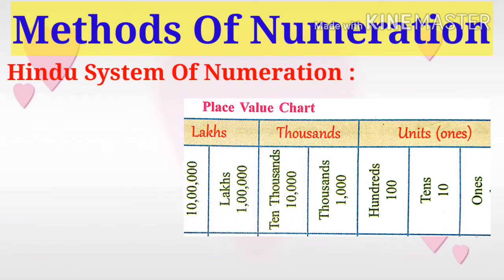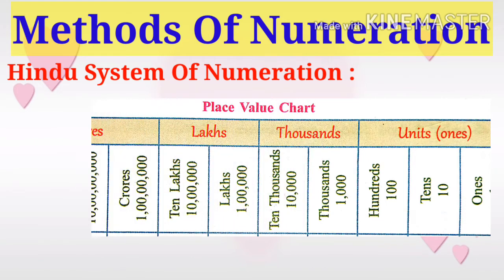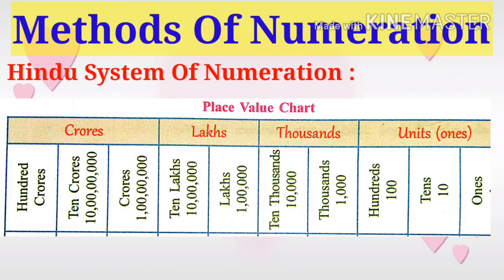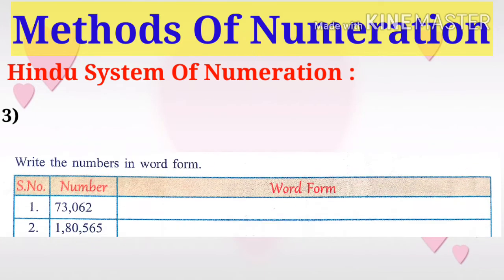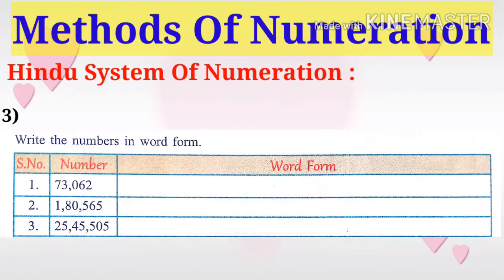In the Hindu system there are four parts: units, thousands, lakhs, and crores. In units: ones, tens, hundreds. In thousands: thousands, ten thousands. In lakhs: one lakh, ten lakhs. In crores: crores, ten crores, and hundred crores.